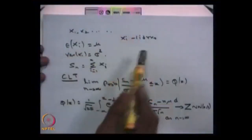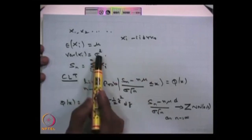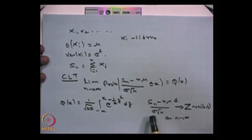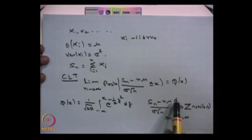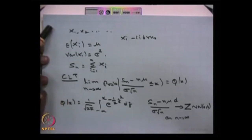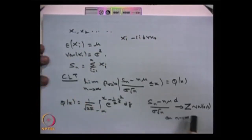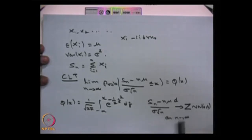The final result is the central limit theorem. If you have a sequence of IID random variables with known mean and variance, and you define Sn standardized as (Sn minus n times mu) divided by (sigma times square root of n), then this converges to the standard normal distribution in the sense of convergence in distribution. Whatever the distribution of the random variables, as long as they are IID, the standardized sum converges to the standard normal distribution. With this, I complete the review of probability theory over two lectures, and the next lecture will start the stochastic process.